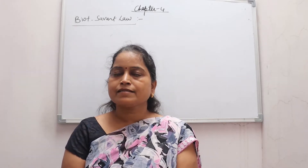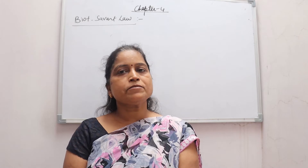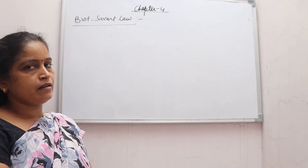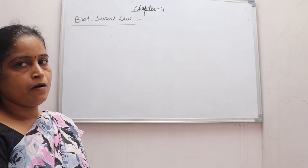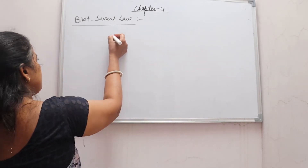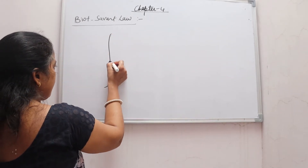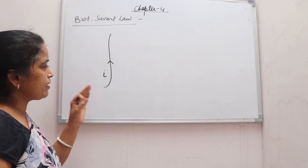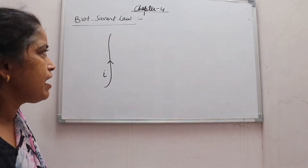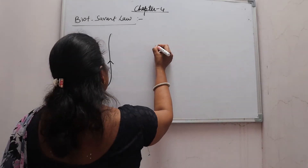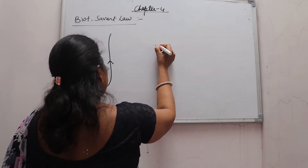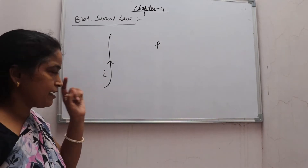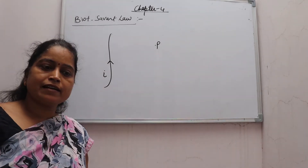Hello students, welcome to physics class. Today our topic is Biot-Savart Law. So if current I flows through a current carrying conductor and we want to calculate the intensity of magnetic field at point P due to this current carrying conductor.